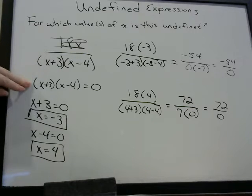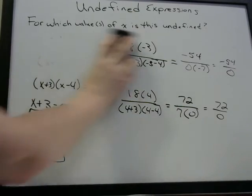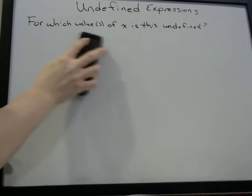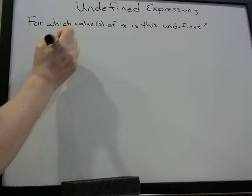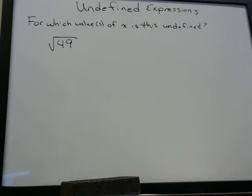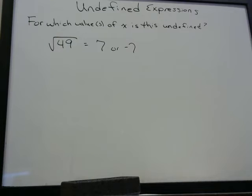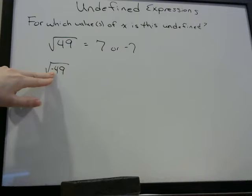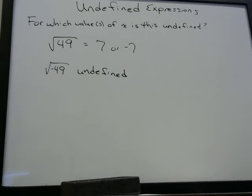The key to these problems when you see a fraction is just look at the denominator, set it equal to zero, and then solve for x. The other type of problem is when dealing with real numbers: a square root cannot have a negative number in it. If you don't know what square roots are, please watch that video on Facebook. The square root of 49 is 7 or negative 7, but normally on the GED test we're really just looking for the positive number.